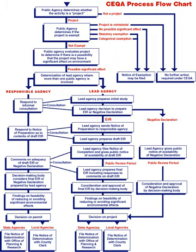CEQA applies to any action when a project requires discretionary approval by a state or local governmental body. Projects may also require ministerial permits that must comply with general plans and local ordinances, such as building permits or marriage licenses. These decisions cannot be denied and provide the governmental body with no judgment as long as the proponent meets the specifications detailed in the permit or license requirements. CEQA does not apply when only ministerial approval is necessary.